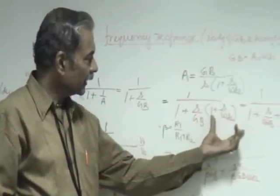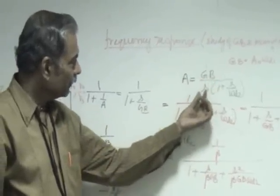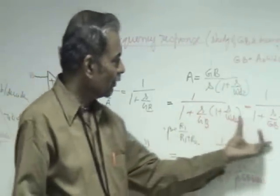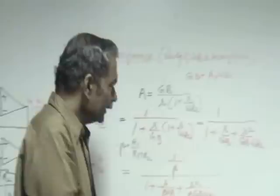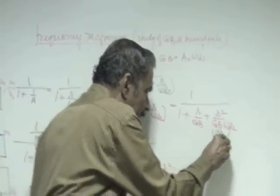It becomes a second order system and GB is replaced by GB divided by s into 1 plus s by omega d2. It gets transformed to a second order equation and in the second order equation this is called the natural frequency of the system.